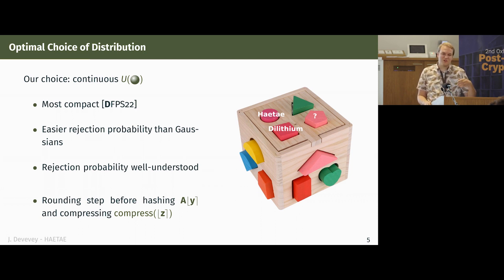It's continuous because when you do the theoretical study of this rejection thing, you have like some ratio of volumes of hyperballs. It's much easier to compute for continuous hyperballs than for discrete ones. But we'll see how we can discretize that later on. And since we don't want the verifier to deal with any kind of floating point or fixed point arithmetic, we will round the final signature before outputting it. This also means that this rounding step is done in the hash to keep it consistent for verification.